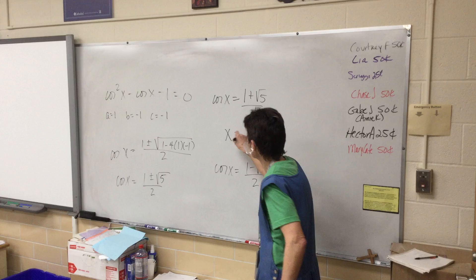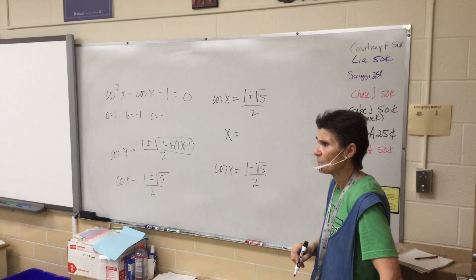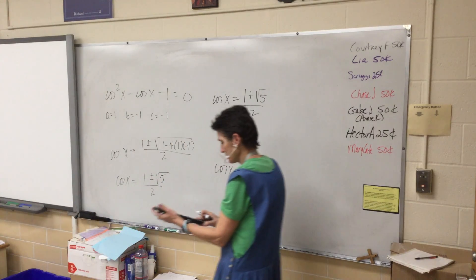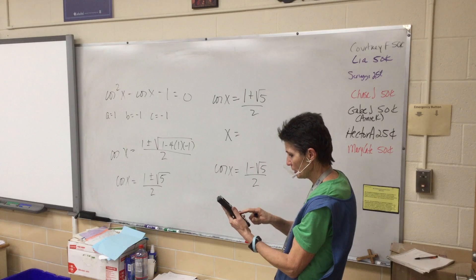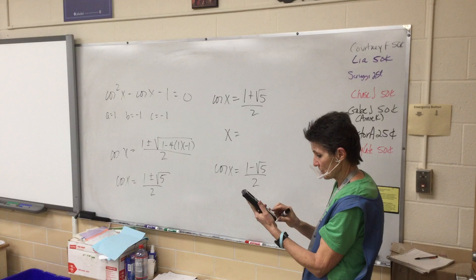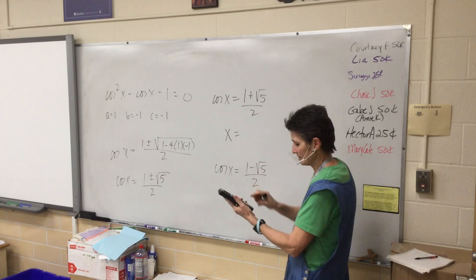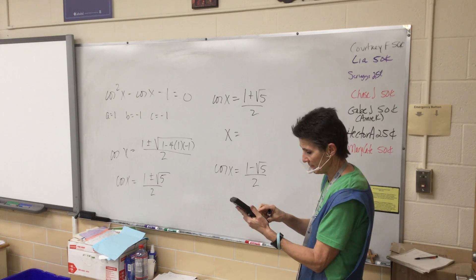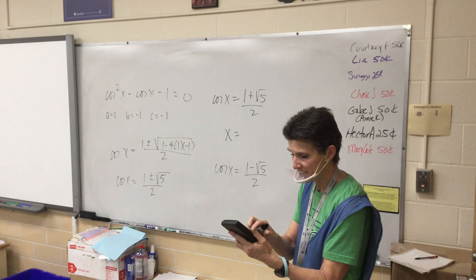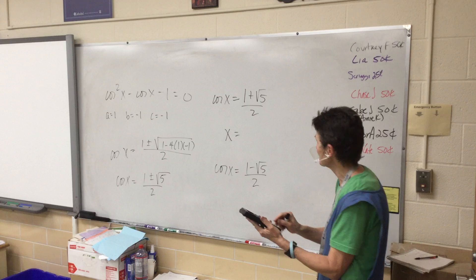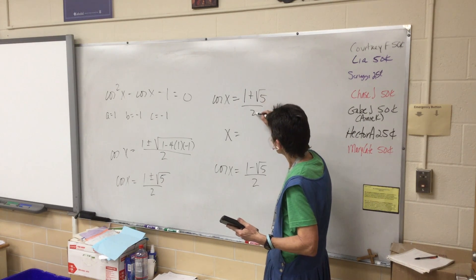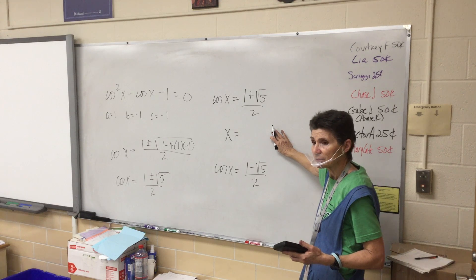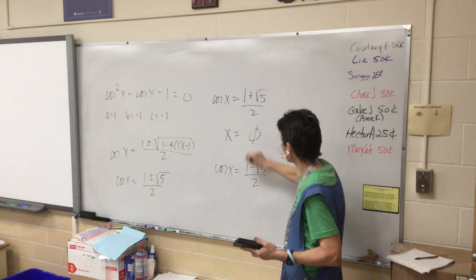Cosine x equals 1 plus root of 5 over 2, and cosine x equals 1 minus root of 5 over 2. How do I find x if I know its cosine? Inverse cosine, that's exactly right. Second cosine. So I went ahead and put this in, then second cosine that answer using my answer button. What happened? Did you get an error? So we don't have any solutions from that one.